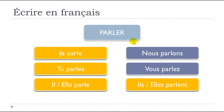So for this verb, if we wrap it up, you can see that there are only three phonetic forms: the first one is 'parle' — the yellow one — covering je, tu, il, elle, ils, and elles. Then you have 'nous parlons,' and then 'vous parlez.'